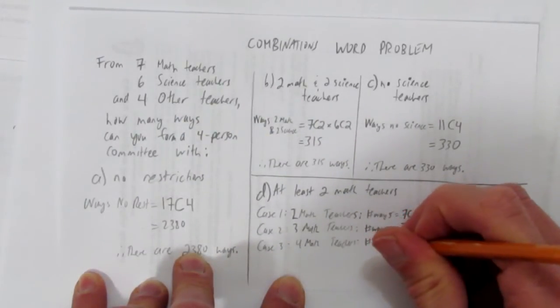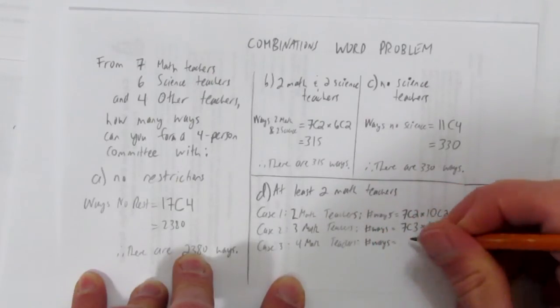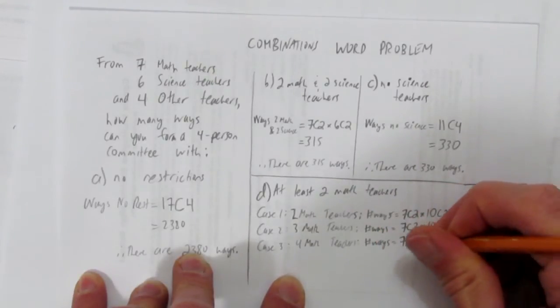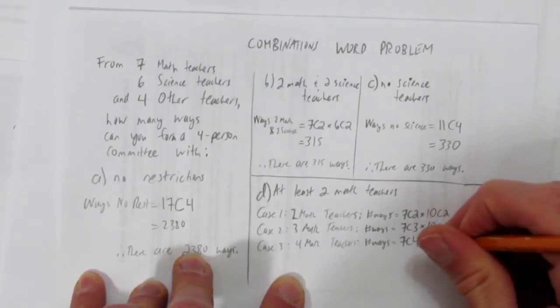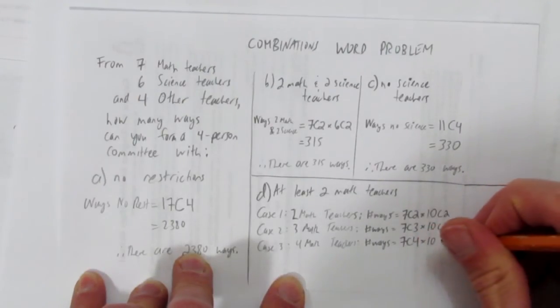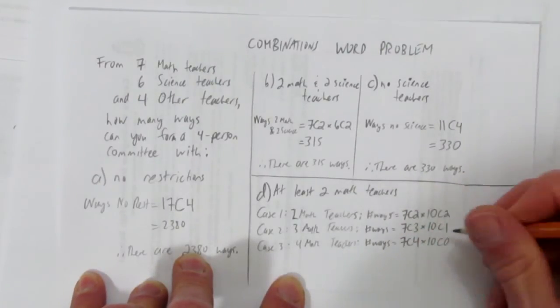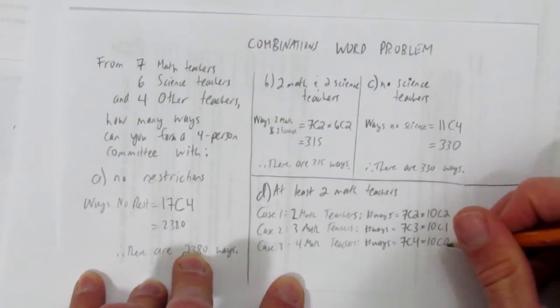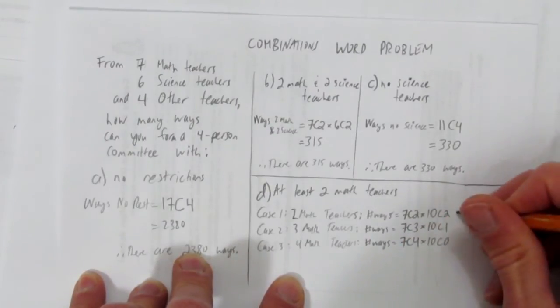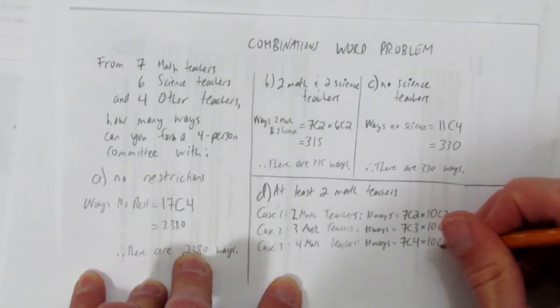And finally, if I have to choose four math teachers, then I just go, seven choose four. You might also notice that you could write, times of the other ten teachers choose zero. It won't matter, because ten choose zero is just going to be one, and when you multiply something by one, it doesn't affect it. So you could have just left it out.